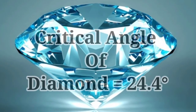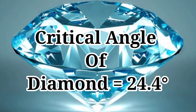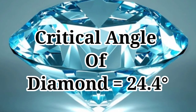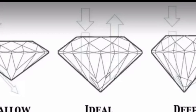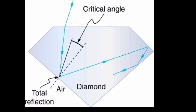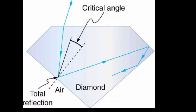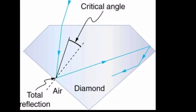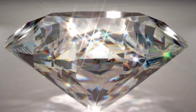The critical angle of diamond is 24.4 degrees. Since this is very low, light is easier to reflect inside the diamond. When we look at the diamond, the vertical angles cause total internal reflection. As much of the light reflects internally, light ultimately comes out — this is the light and sparkle we see.